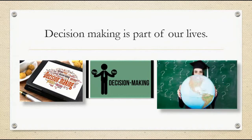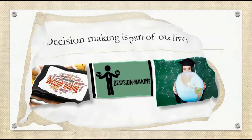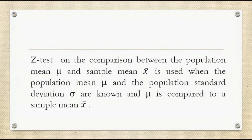We will learn these steps. The first step in hypothesis testing is the formation of the null and alternative hypothesis. The Z-Test on the comparison between the population mean mu and sample mean x-bar is used when the population mean mu and the population standard deviation sigma are known, and mu is compared to the sample mean x-bar. It is also important to identify the parameters or statistics involved in the problem to determine the appropriate formula.